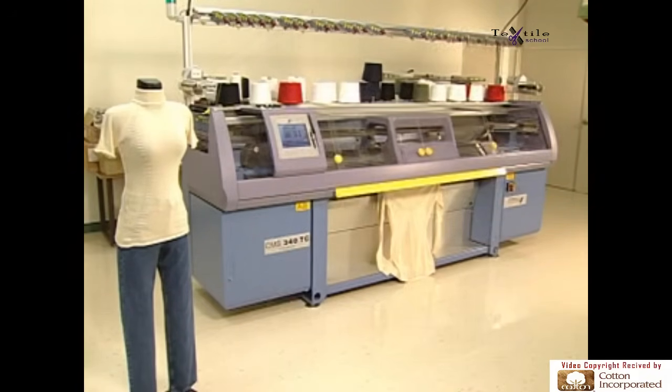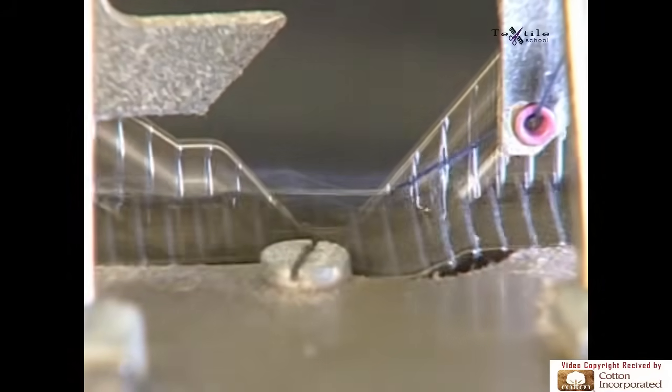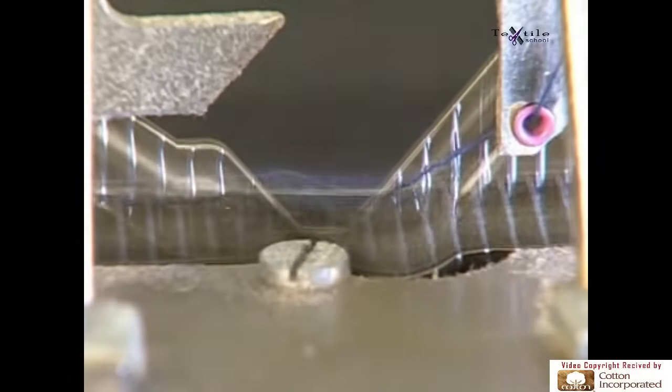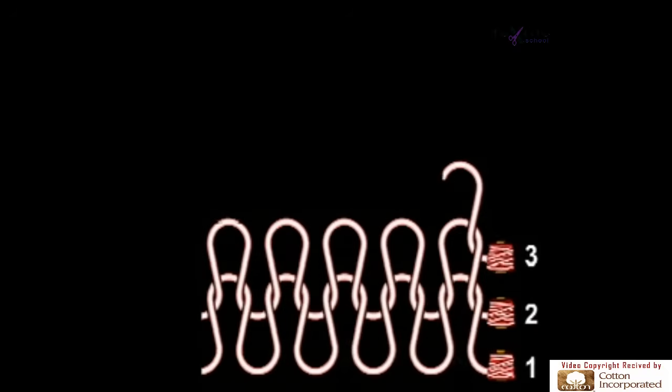Regardless of the type of machine used, in weft knitting, needles placed next to each other knit one after another in sequence to produce one row of loops from the same yarn. Here is an illustration of how loops of yarn are created by a weft knitting machine that knits yarn in a horizontal manner so that the loops are formed from right to left.